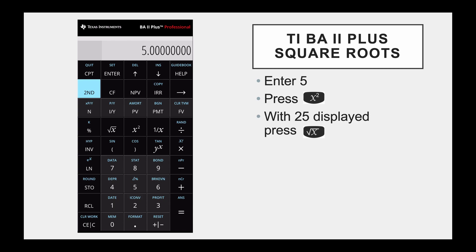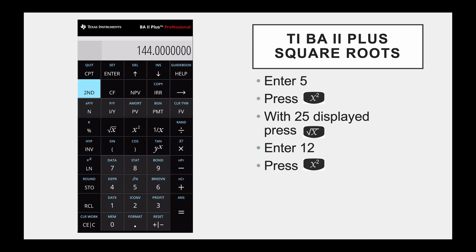Now we are going to do another one. We're going to enter 12, press x squared — that gives us 144. With 144 displayed, we press the x with the root again for the square root, and that gets us 12.